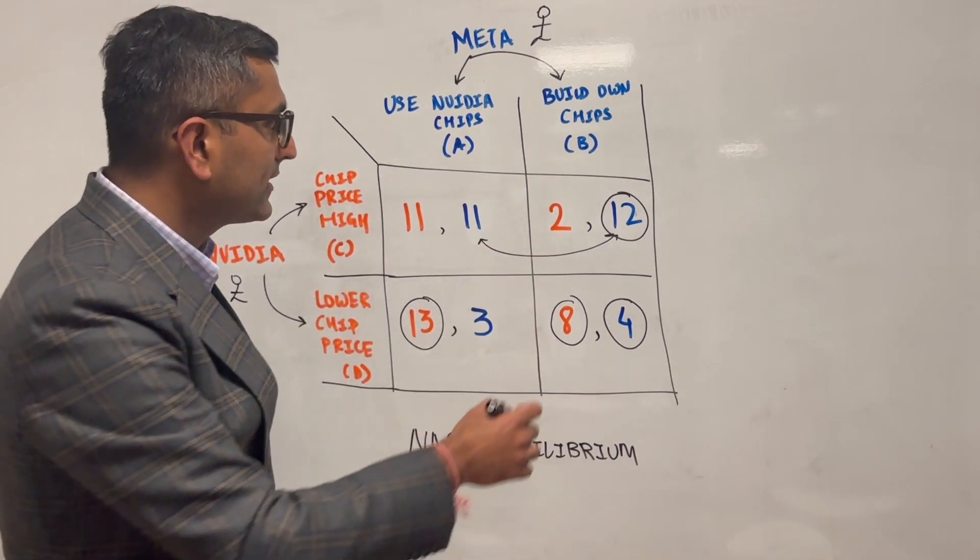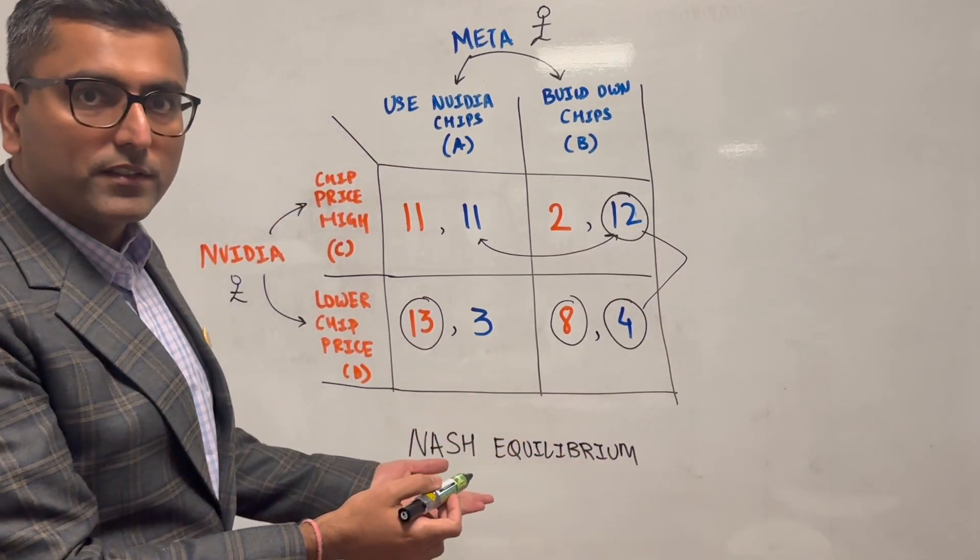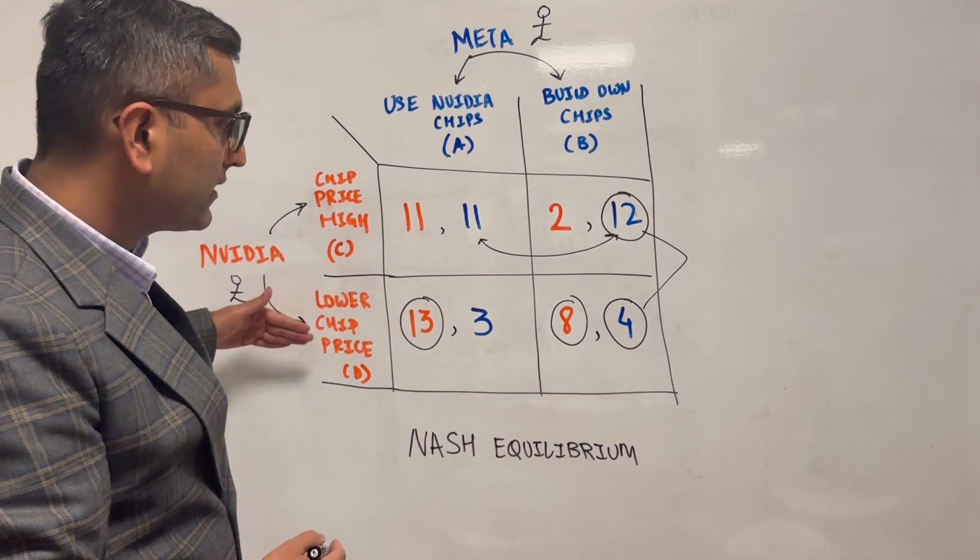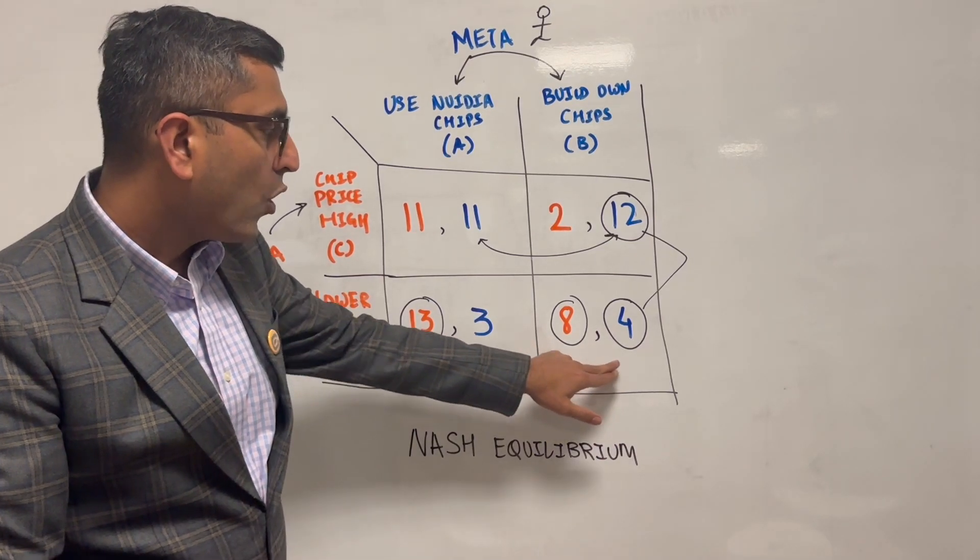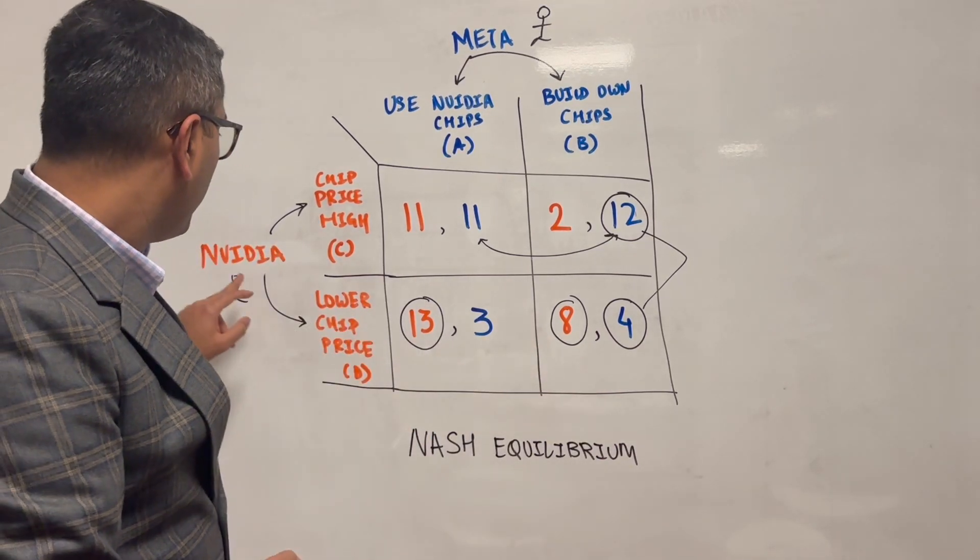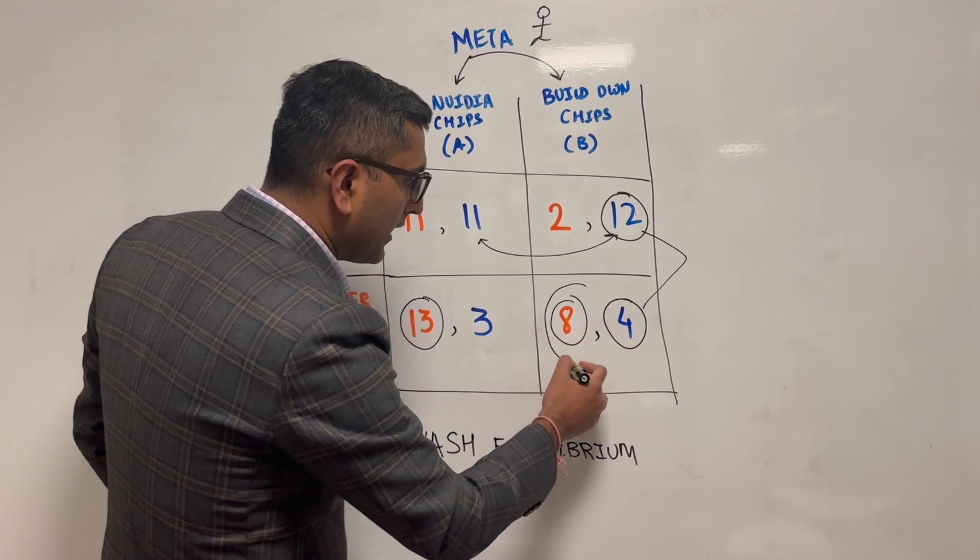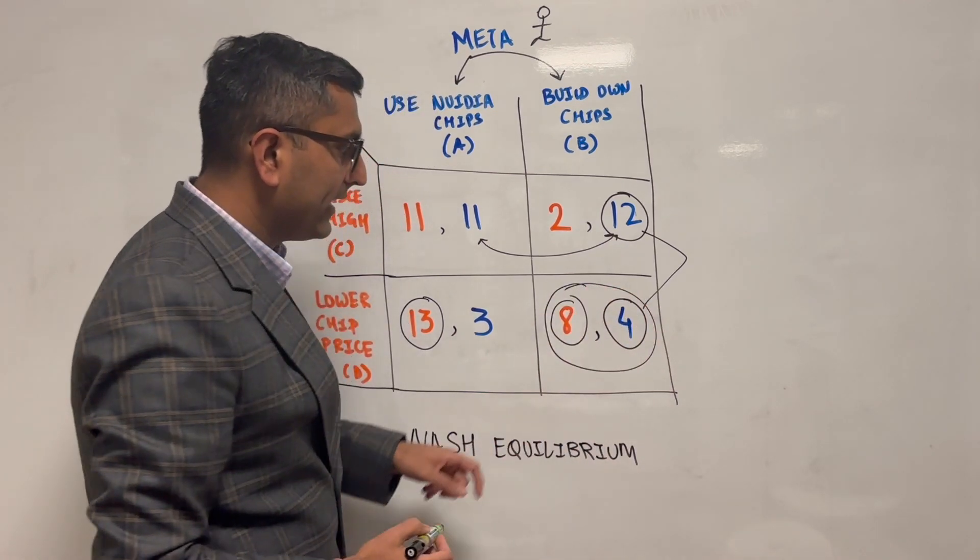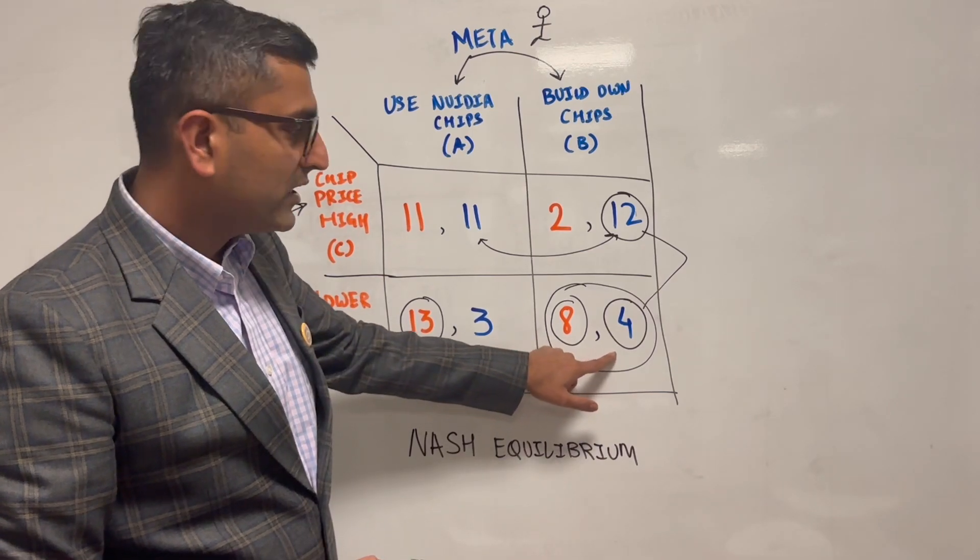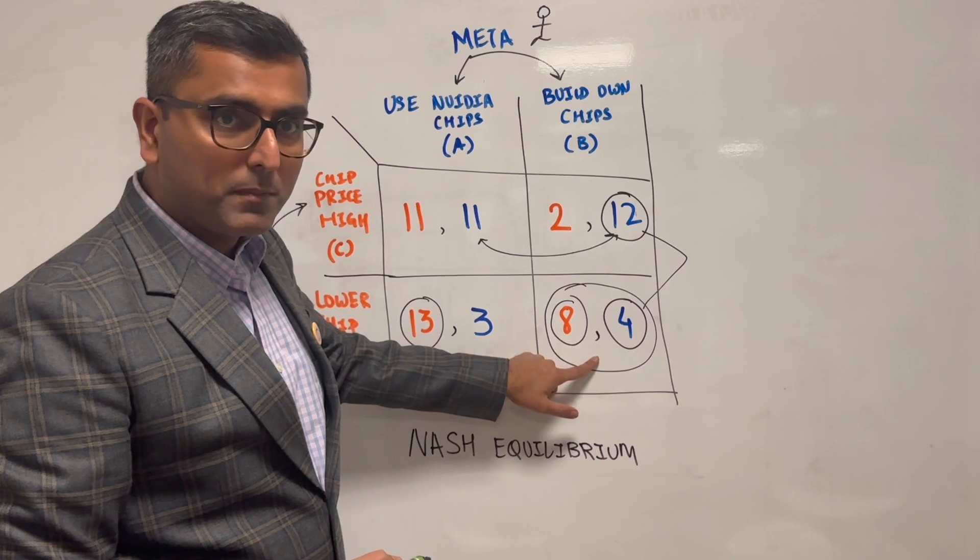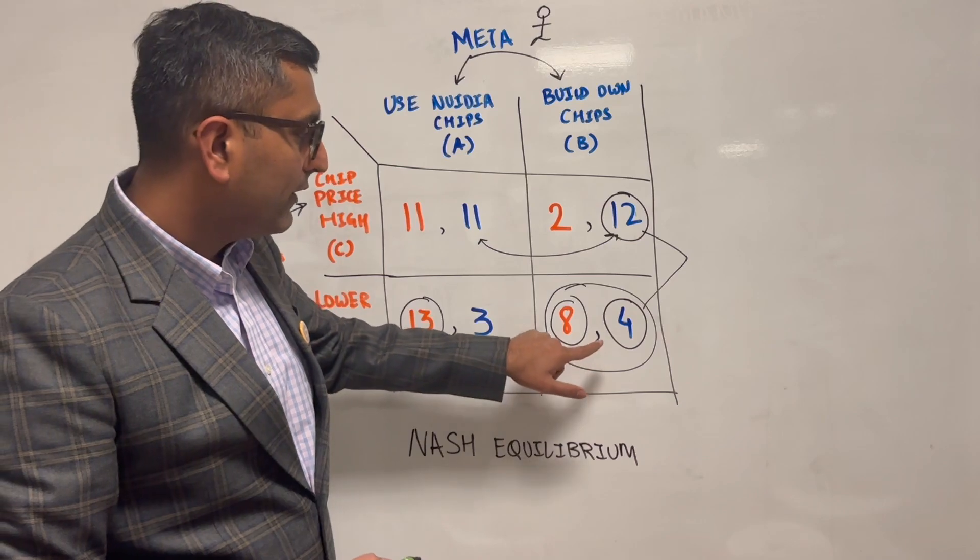So that's what it means to have a dominant strategy, meaning each of them have one choice, independent of the other party's choice. So when we now have this overlap, where Nvidia is always going to go with D and Meta is always going to go with B, and we see both of these choices coinciding, meaning we have a cell with both dominant strategies or both payoffs much better for this company, we have an equilibrium.